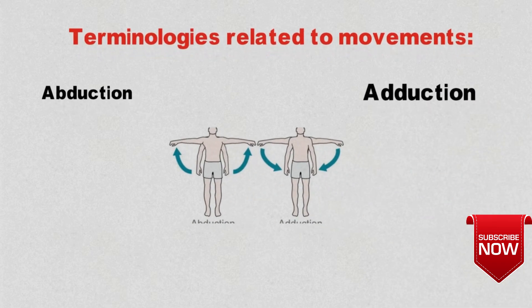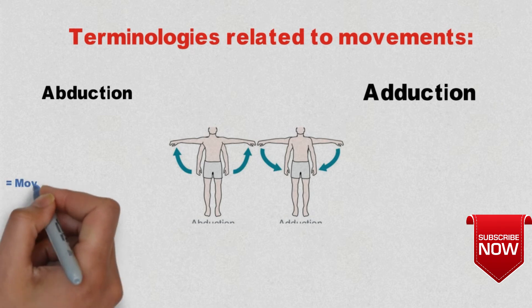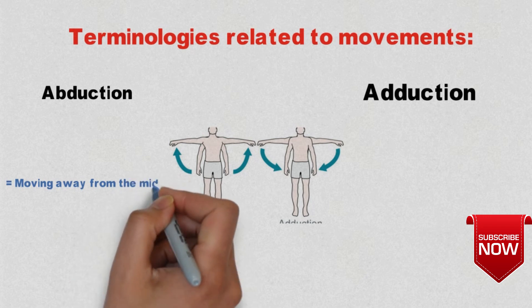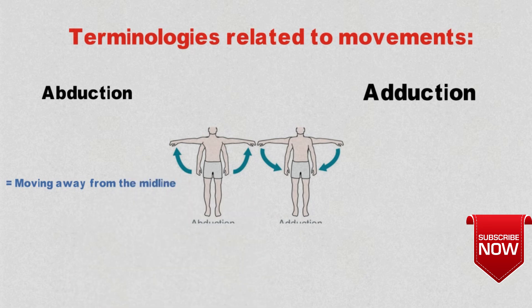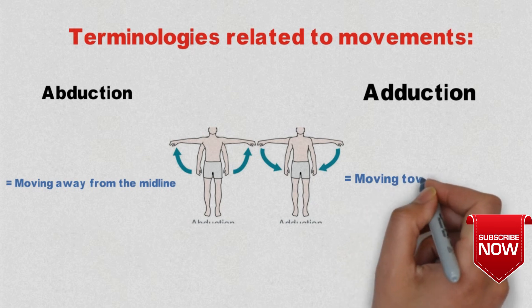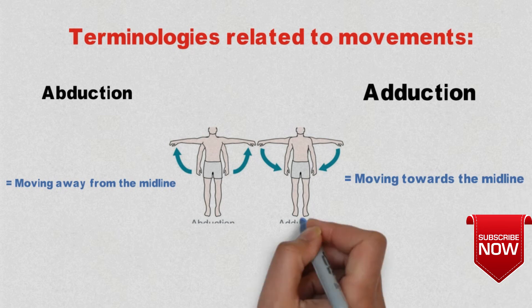In the diagram, abduction shows a person moving his hand away from the midline, and adduction shows a person moving his hand towards the midline. We can see the midline indicated by the arrow in the diagram.